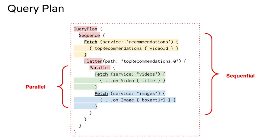So that's precisely how the query plan is constructed. The recommended videos are fetched first, and then in parallel, title is fetched from the video service and box art URLs are fetched from the image service. The gateway sees a query plan in this form — it's simply a tree of fetch, parallel, sequence, and flatten nodes. There are three fetch nodes in this query plan. The parent of the very first fetch is a sequence node, signifying that whatever sibling of this first fetch will happen after that fetch is executed. The sibling of this initial fetch is a nested parallel node, signifying that after the first fetch from recommendations, the gateway should execute the subsequent fetches in parallel. That is then wrapped in a flatten node, which signifies how the results should get stitched back together.